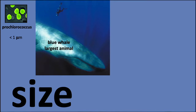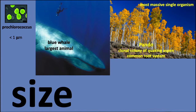But if you ask which life form has the largest mass, you have to look at Pando — a clonal colony of quaking aspen with a common root system. They're genetically identical, so you might call it a single organism, or you might say it's thousands of identical twins connected by roots. It's hard to say — at these largest sizes, things become ambiguous.